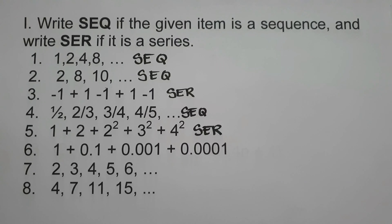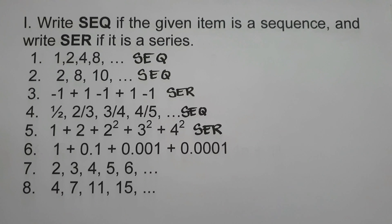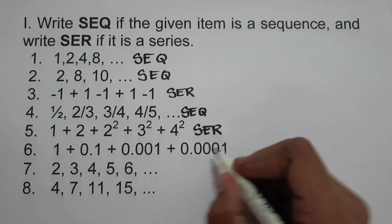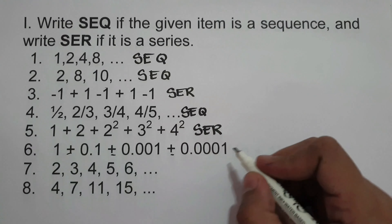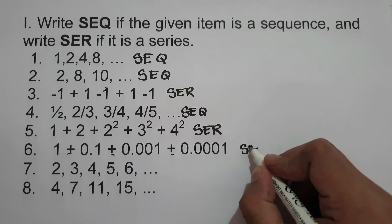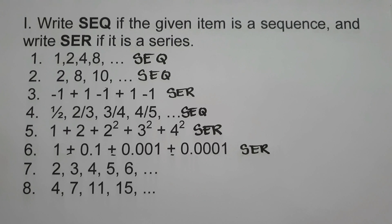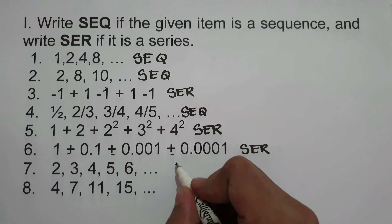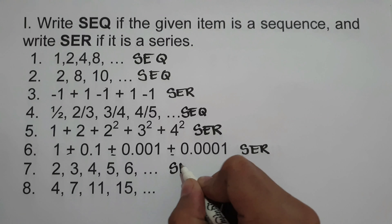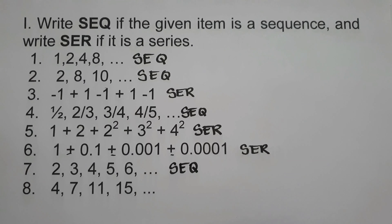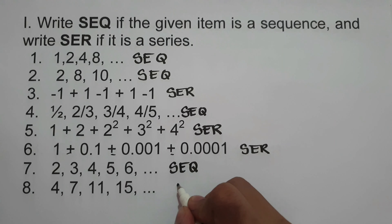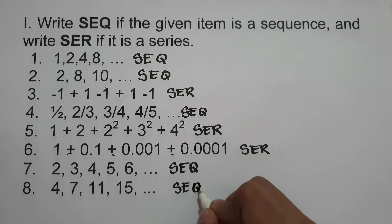Number 6: 1 + 0.1 + 0.001 + 0.0001. This is an example of a series because it is separated by a plus sign — SER. Number 7: 2, 3, 4, 5, 6. We have commas, therefore it is a sequence. Number 8: 4, 7, 11, and 15. This is also an example of a sequence.